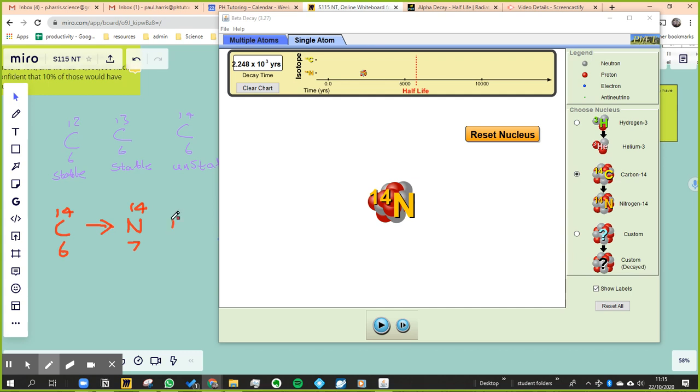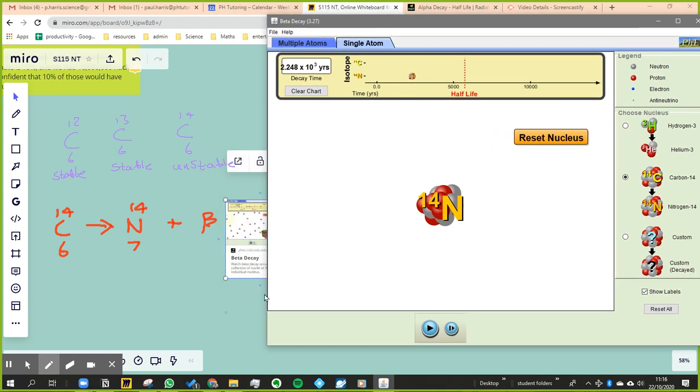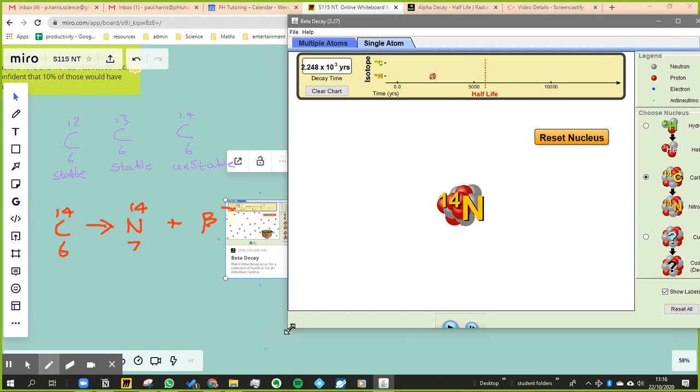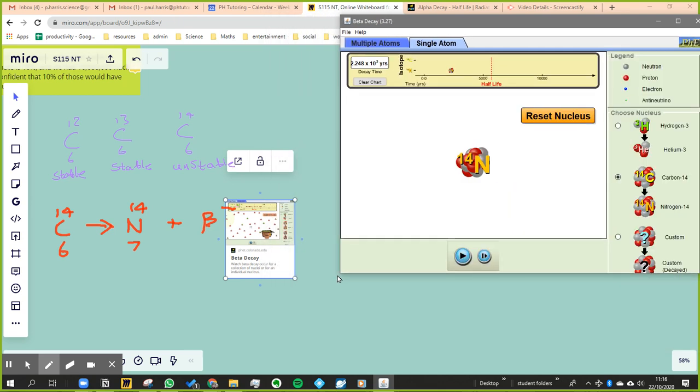So it went into nitrogen-14. If we looked on a periodic table, you would find that the atomic number of nitrogen is actually seven. Now something was given off. Actually two things were given off.